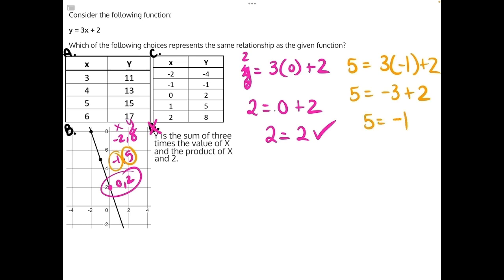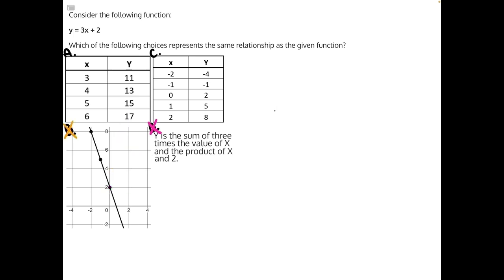Negative 3 plus 2 would give us a negative 1, which does not equal 5, and thus makes answer choice B incorrect. Now let's take a look at our two tables.